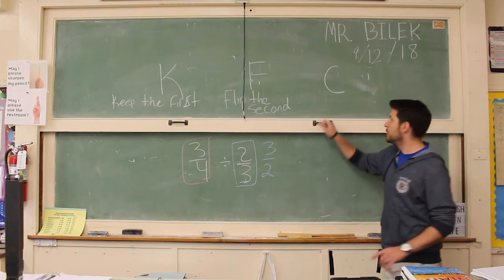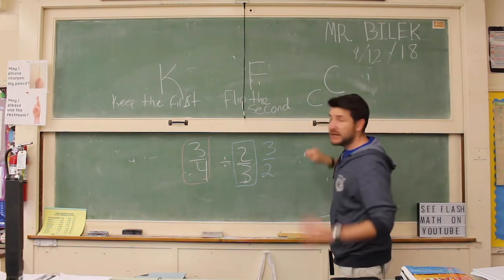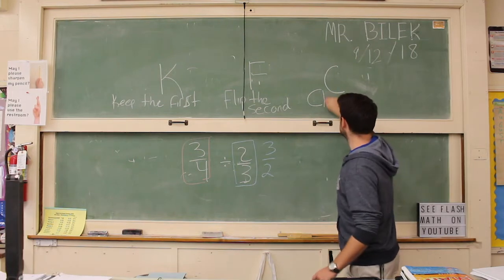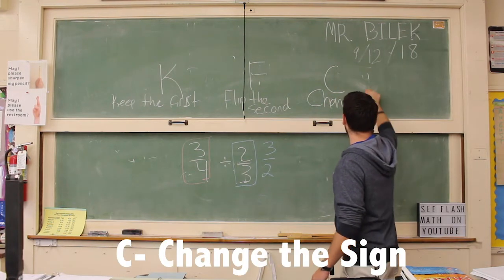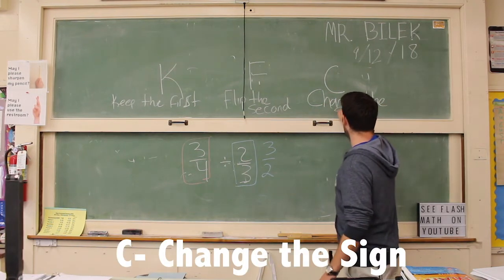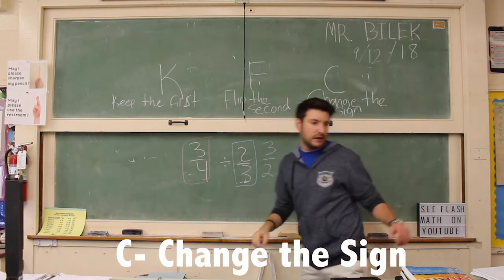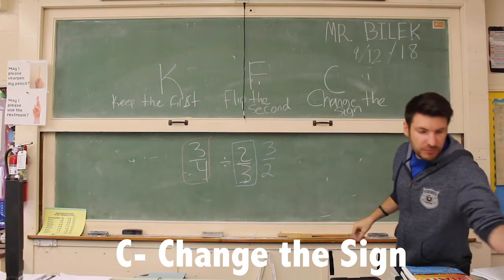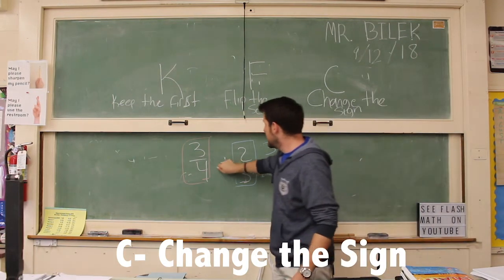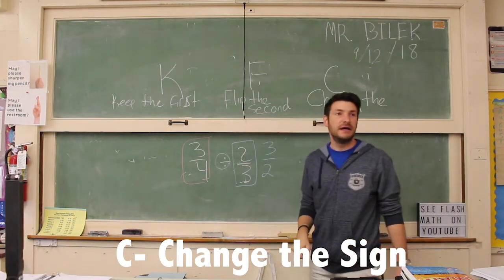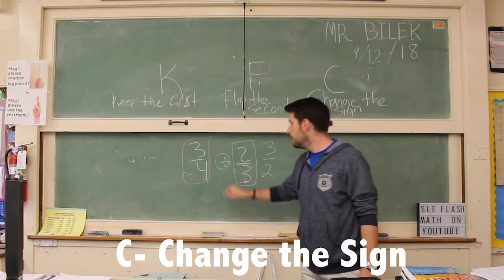Our last step that we want to do, this is where it gets complicated so pay close attention, is we want to change the sign. And what I mean by change the sign is there is a sign inside of this problem. It's our division sign right here. We want to take this division sign and turn it into multiplication.